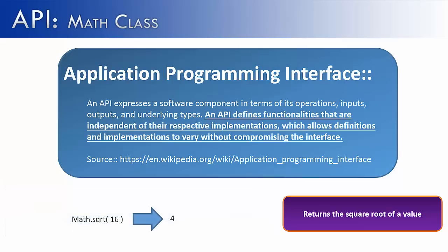The second part is, an API defines functionalities that are independent of their respective implementations, which allows definitions and implementations to vary without compromising the interface. That's a lot to say, but it has a simple meaning.